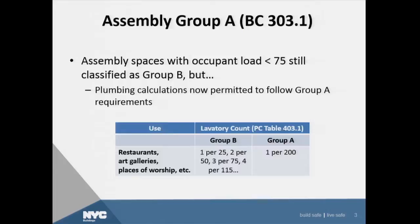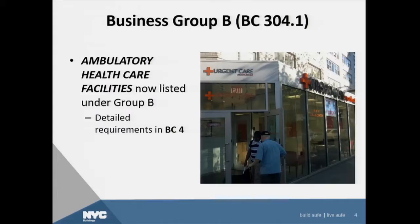We also clarified in BC 304.1, ambulatory healthcare facilities. We decided to classify this under a B, business occupancy. These are the urgent care facilities. There is a picture of it shown here, and there are detailed requirements for such facilities in the code.